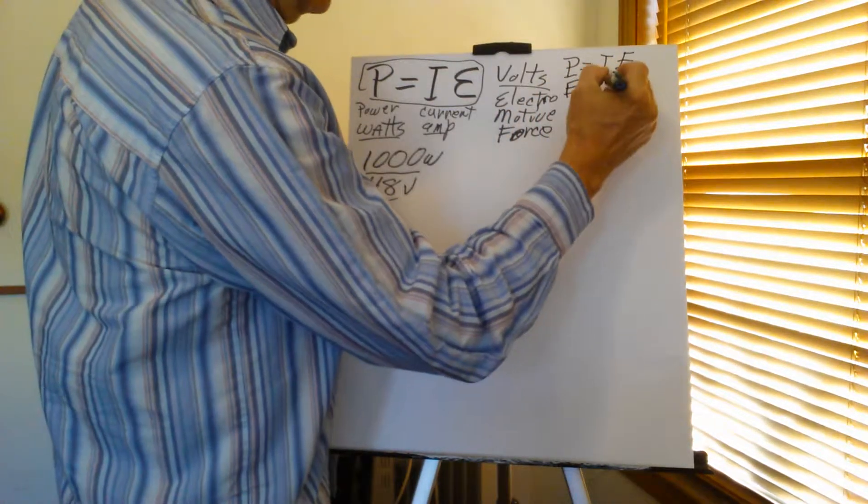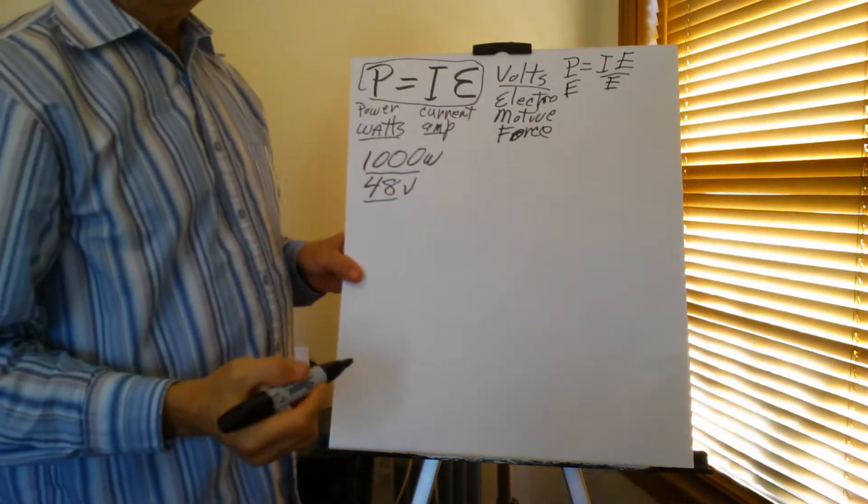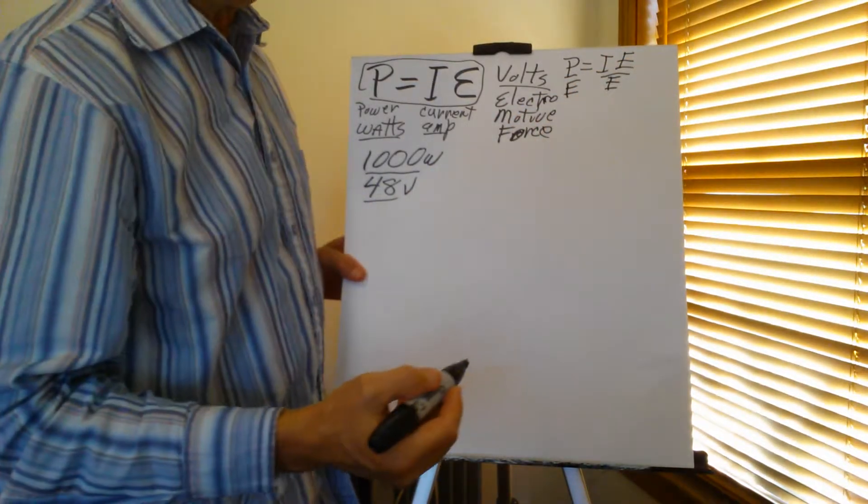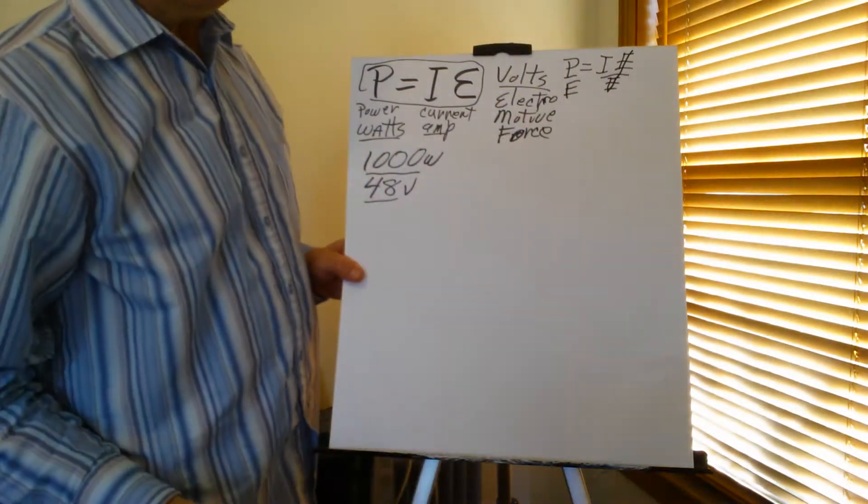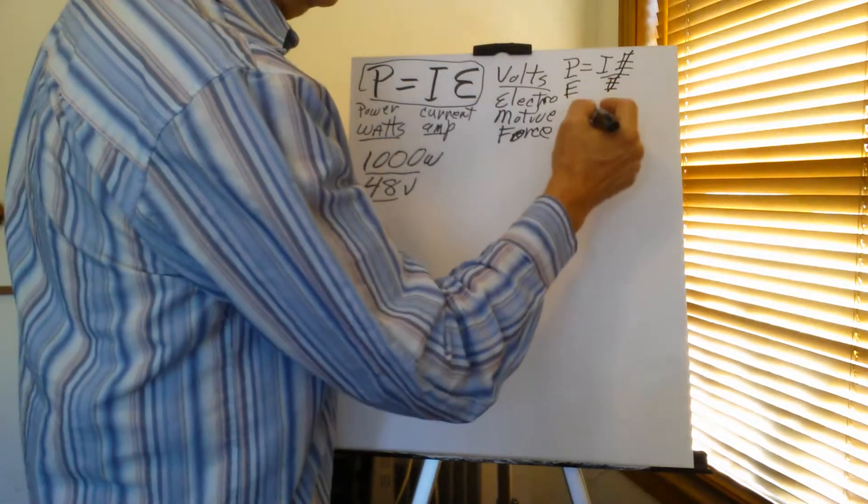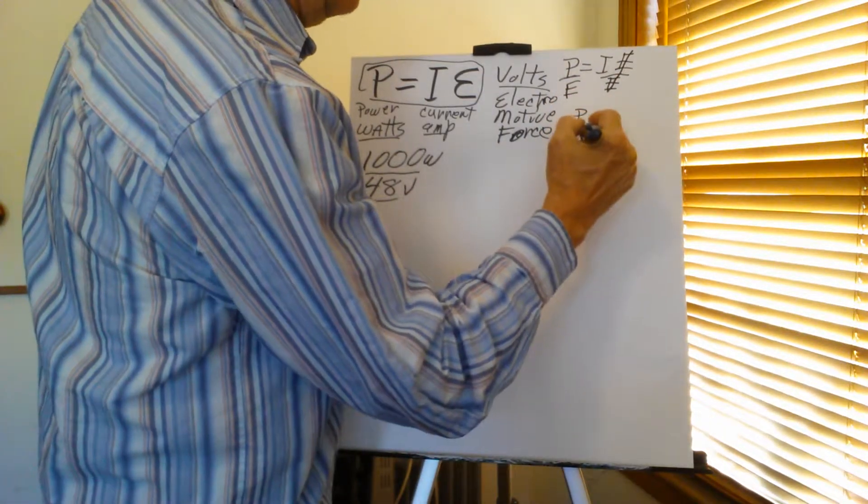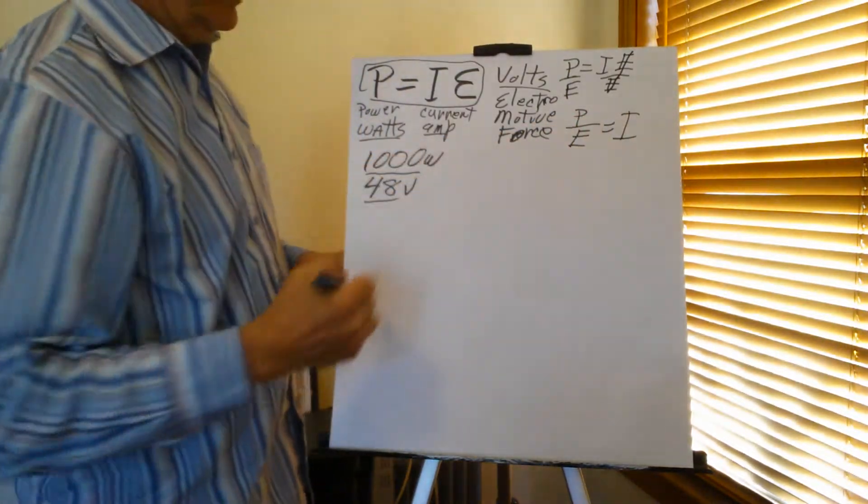We can divide both sides by E and they tell you it cancels out. That's not what it is. Any number over itself is equal to one. Any number multiplied by one is itself. So technically it cancels out. We end up with a formula which is our power divided by our voltage is equal to how much current we need to run this.